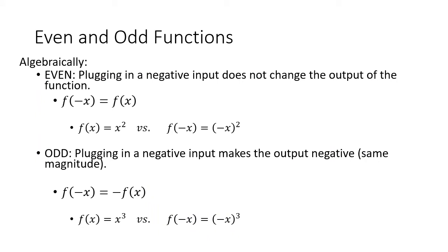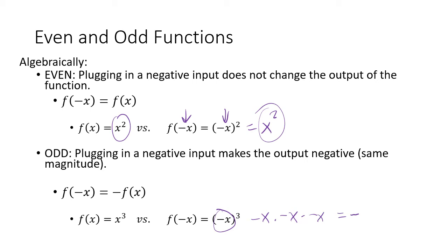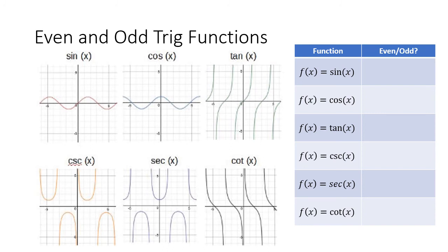The last main topic is even and odd functions. An even function is one where plugging in a negative input doesn't change the sign of the output. An odd function is the opposite — plugging in a negative input changes the sign of the output. For example, f(x) = x squared: plugging in negative x gives x squared still, no sign change, so it's even. For x cubed: plugging in negative x gives negative x cubed — the sign changed, so it's an odd function. Sine of 30 degrees is one half, and sine of negative 30 degrees is negative one half — the sign changed, so sine is an odd function.